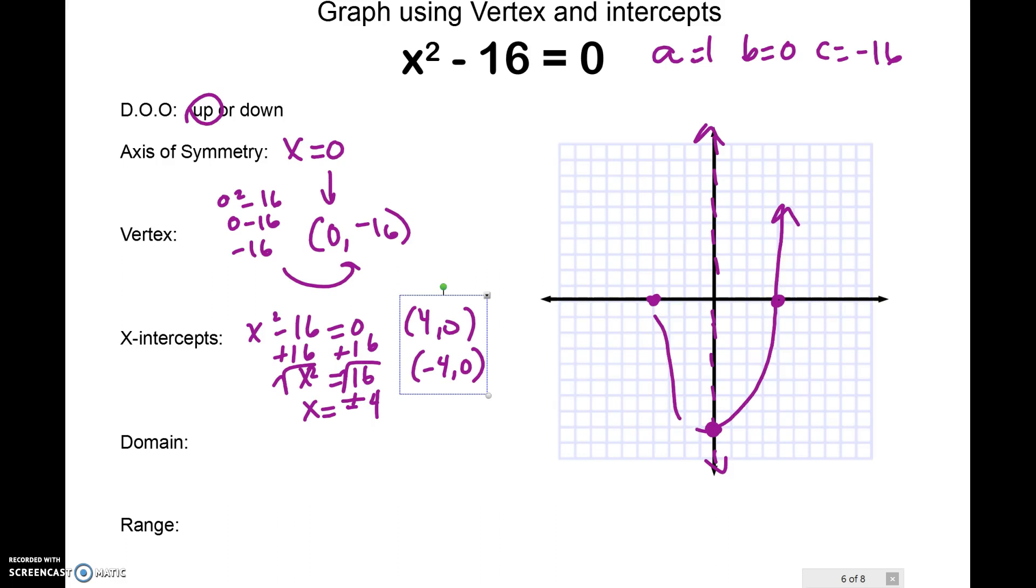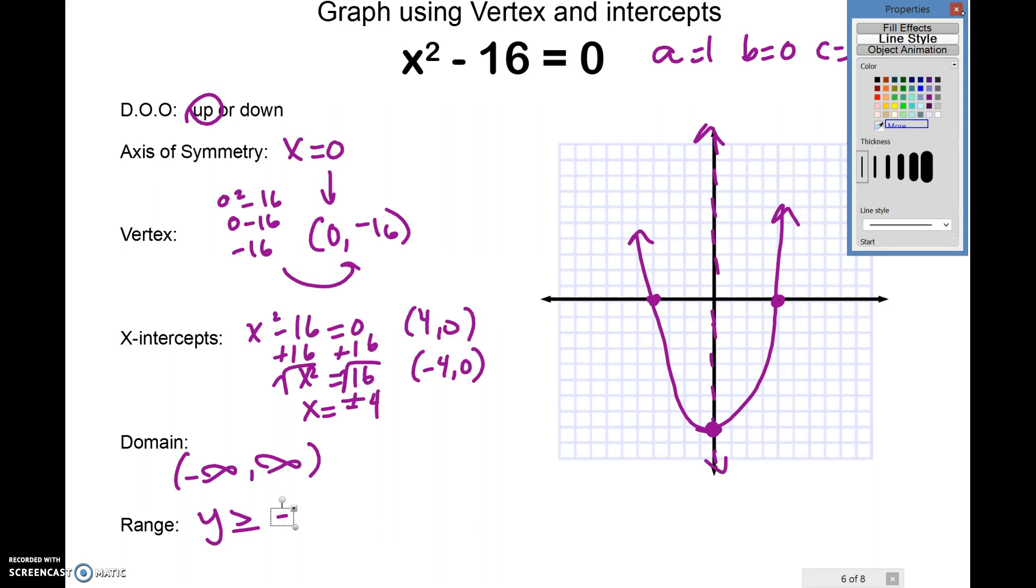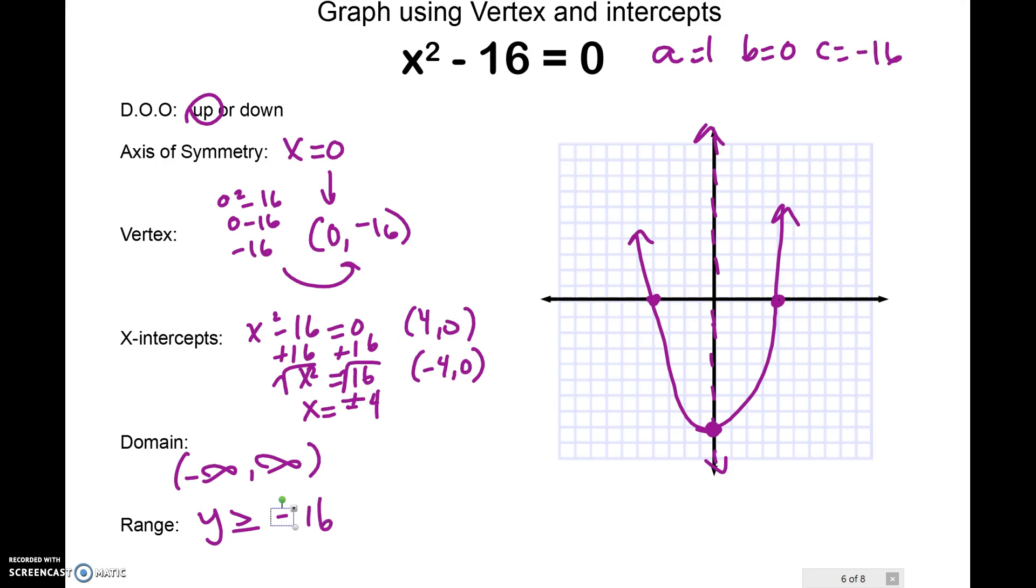So my y-intercept in this case is my vertex. So I don't have a separate point for y-intercept, the y-intercept is the same as my vertex. Domain is going to be negative infinity, comma, infinity, all real numbers. And my range, since it opens up, it's y is greater than or equal to the y of my vertex, negative 16. And as an interval, we start from the bottom up. So our first parameter is negative 16, and it continues up to infinity.